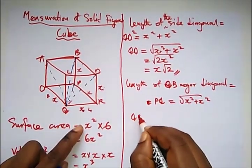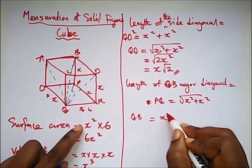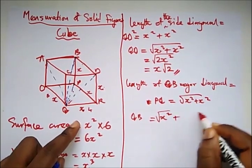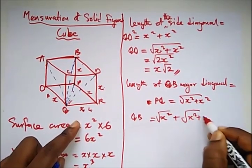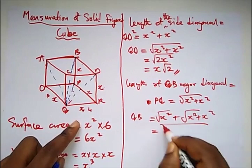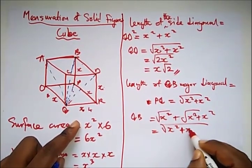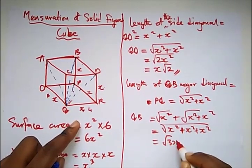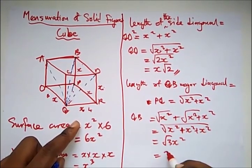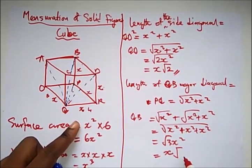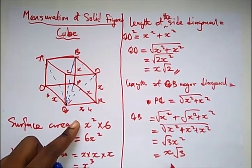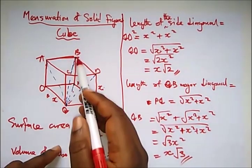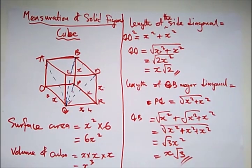So we have what? QB is equal to what? x², which will also root out, plus what? This also. And everything will be together since they are the same. So plus x² plus x². And what we have here, we have what? 3x². Bringing x out, we have what? x multiplied by √3. So this is the formula for calculating our major diagonal.